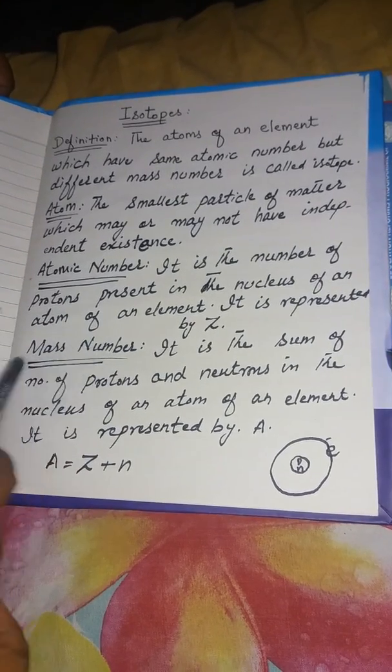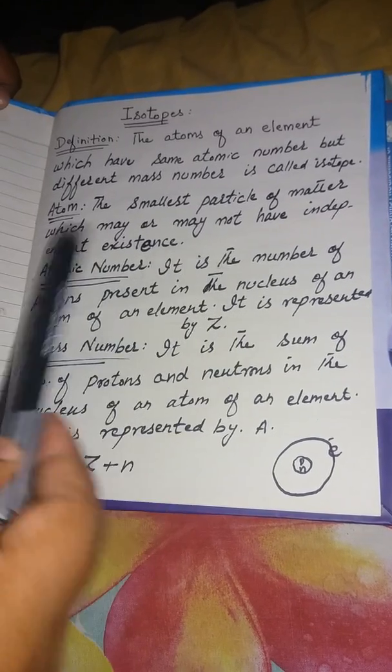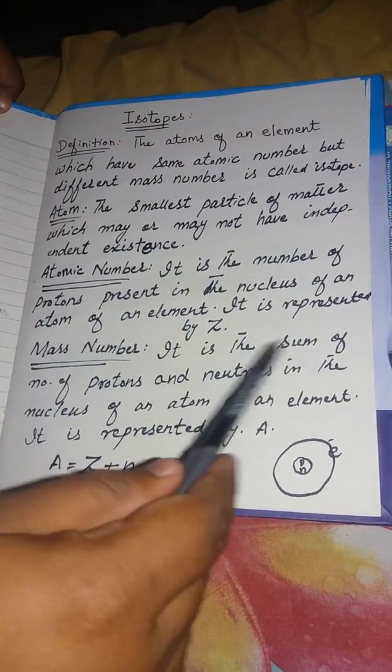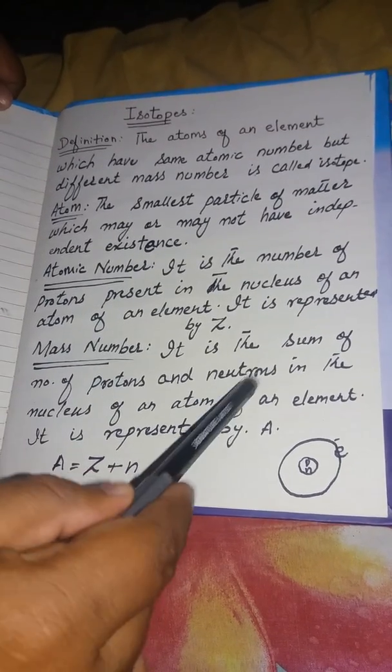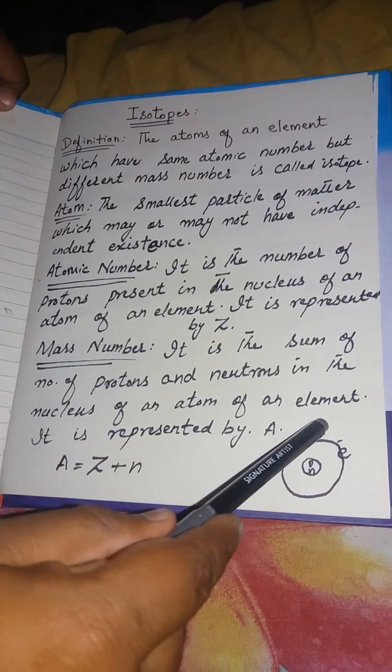Now I will define the word mass number. Mass number is defined as the sum of number of protons and neutrons present in the nucleus of an atom of an element.